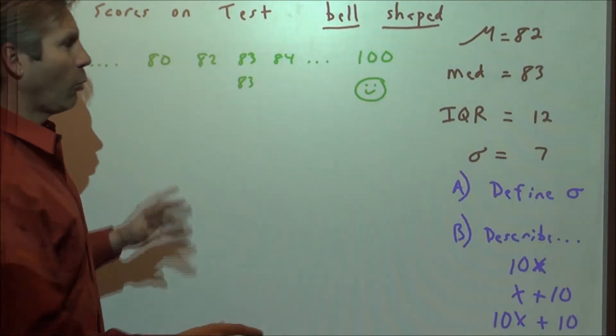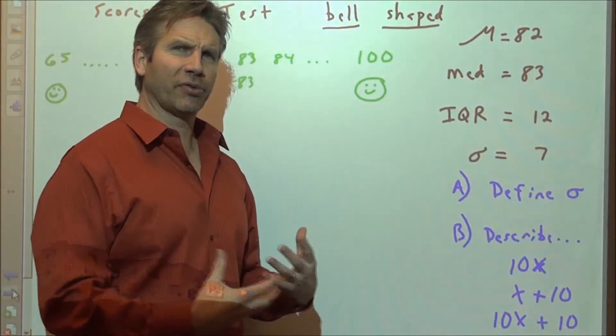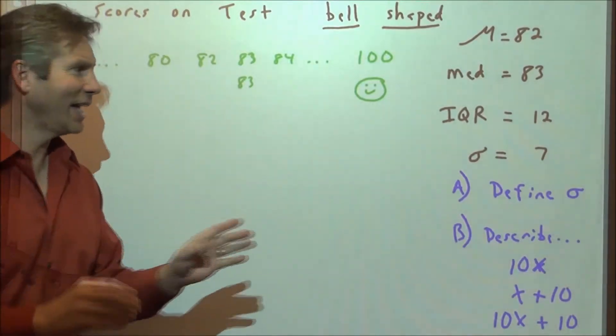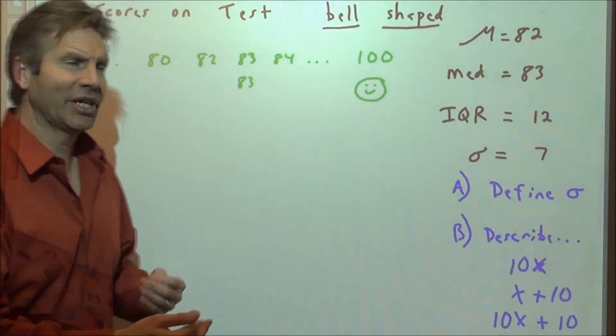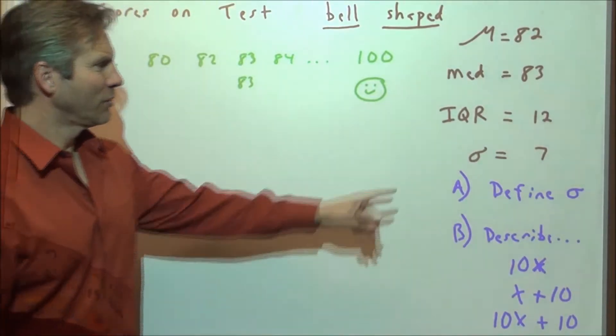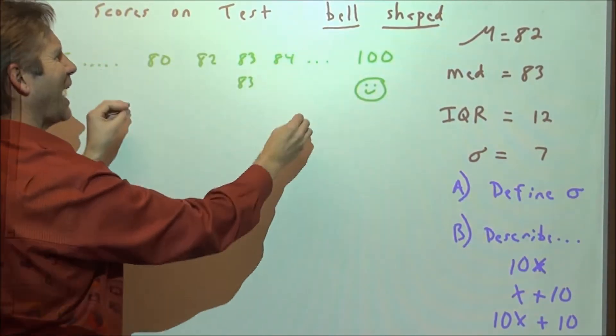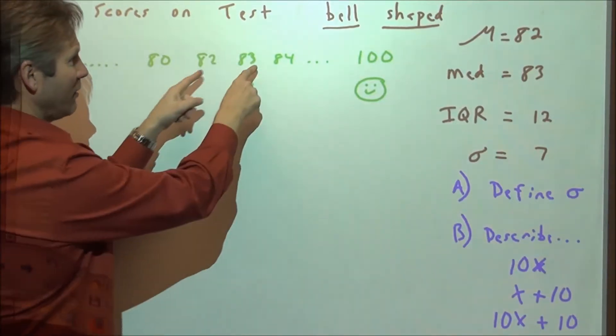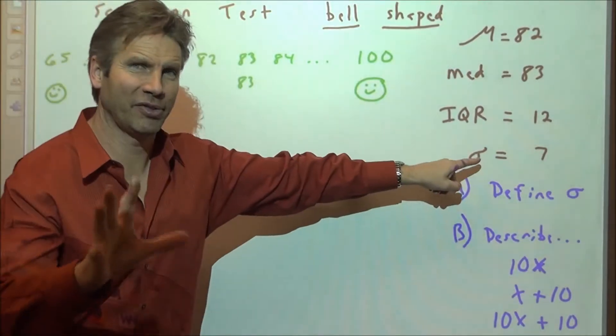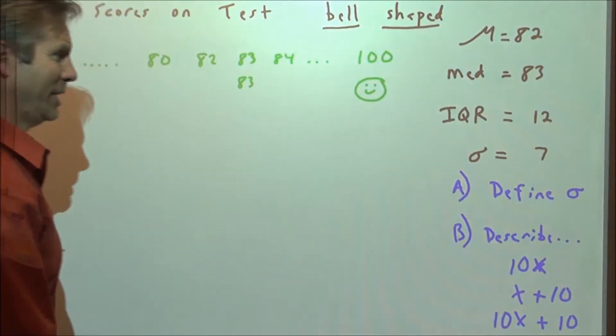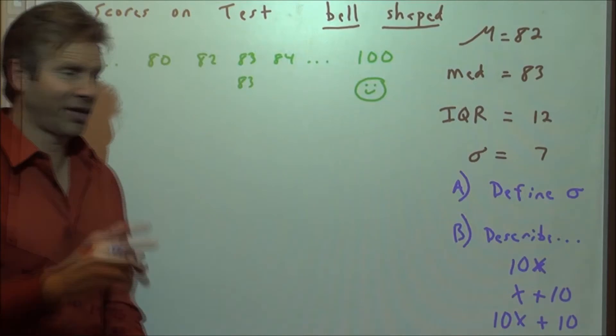You need to be able to define standard deviation in terms that the average person could understand. So what we tend to say in describing the standard deviation is, it's approximately, on average, how far is every score away from the mean. If you go seven units above the mean of 82 and seven units below the mean of 82, that's going to be kind of, on average, how far each score is away. That's not exactly precise. Close enough, though. And it's what AP is looking for if they ask you to describe standard deviation.